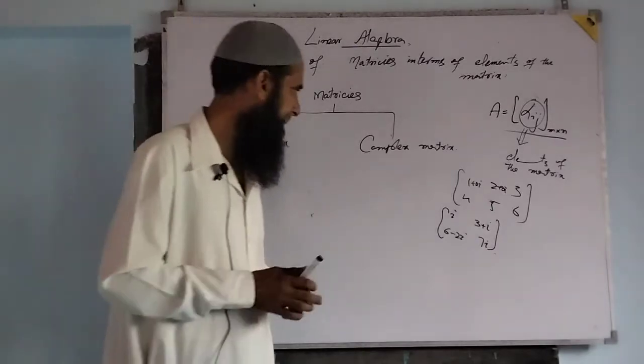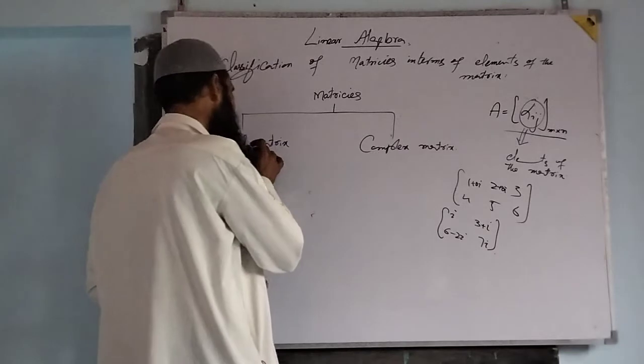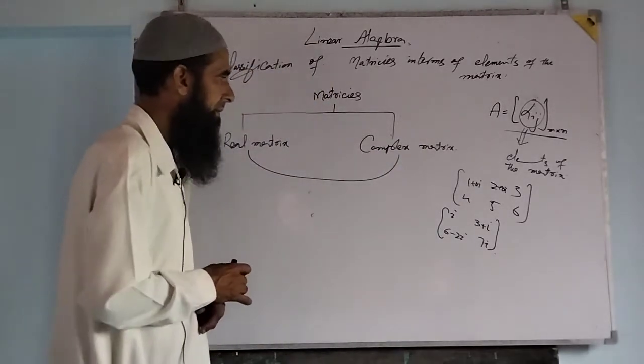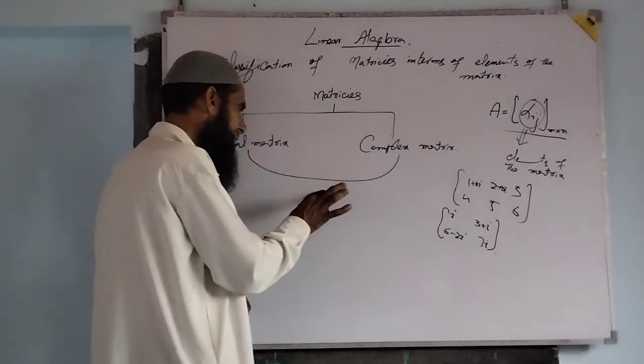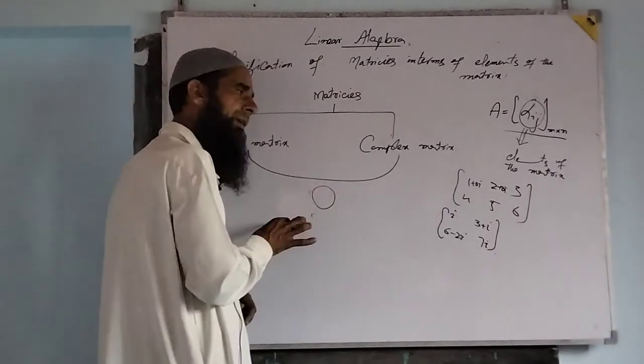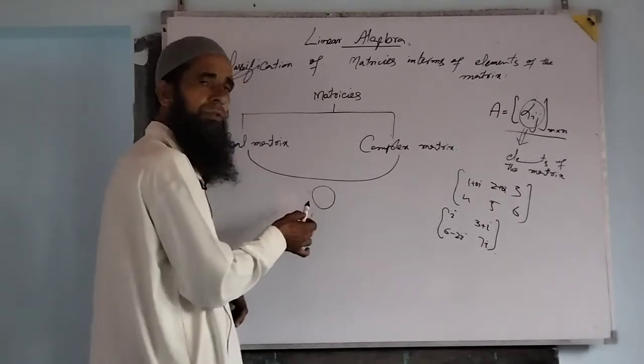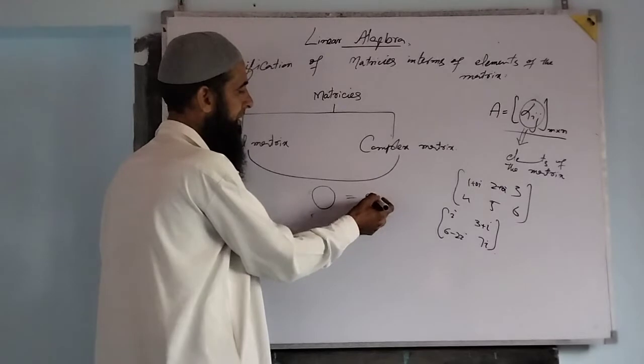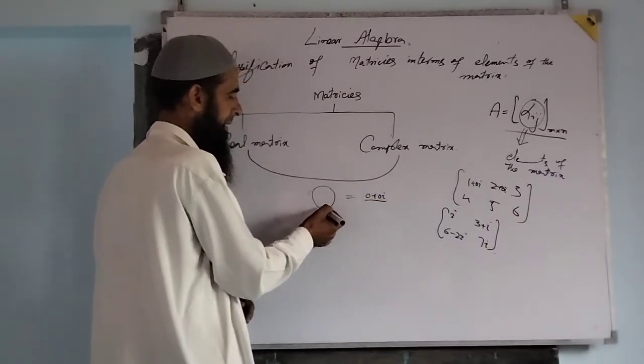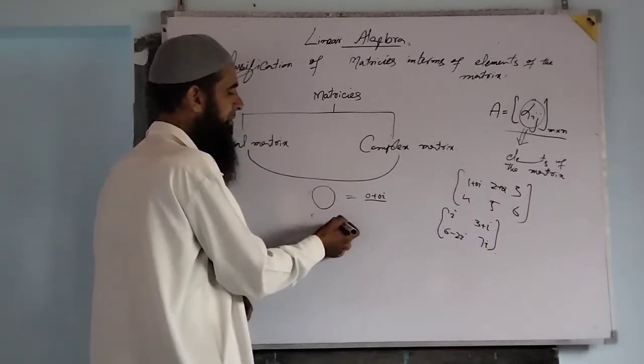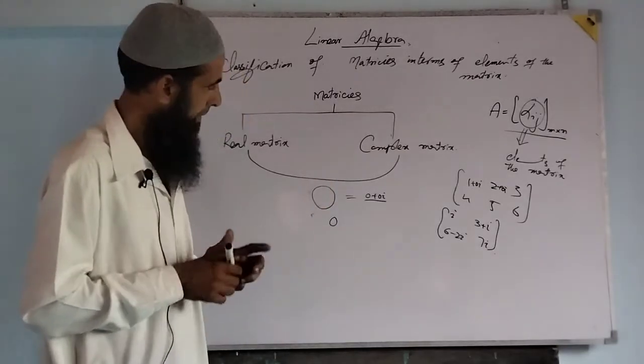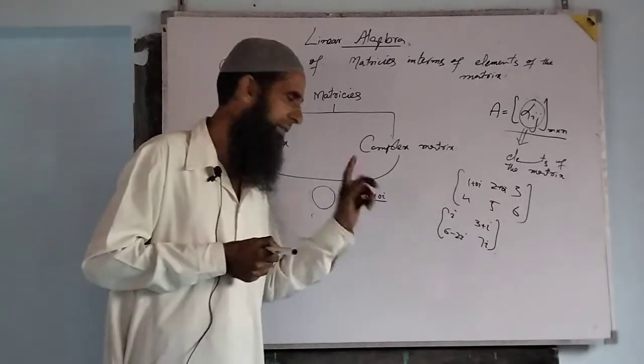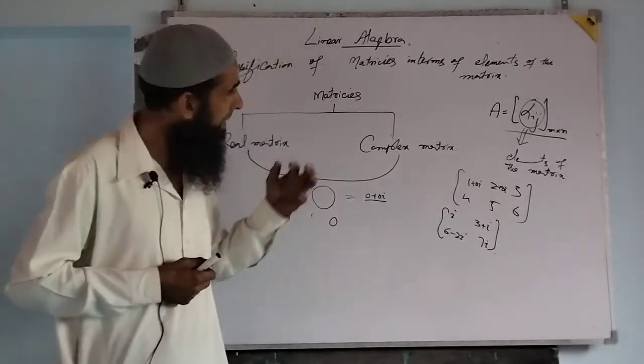Talking about real numbers and complex numbers: zero in real numbers is zero, in complex numbers it is also zero - a complex number that is zero plus zero iota. In the real set it is zero. This can also be represented by zero. It is zero as a complex number, and in the real set it is three.